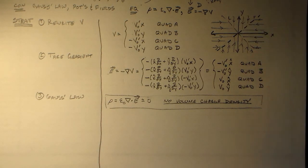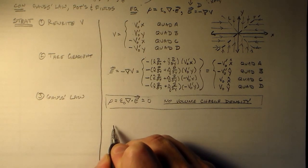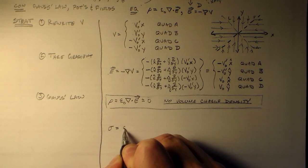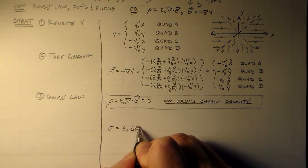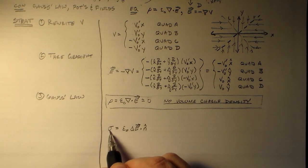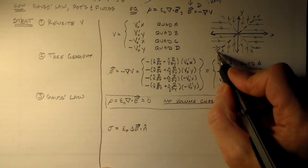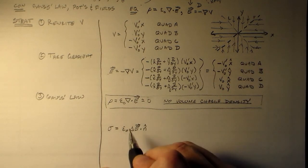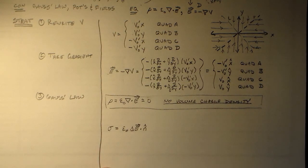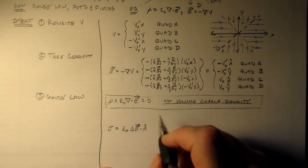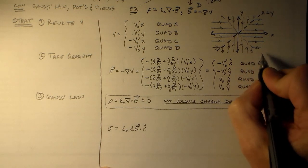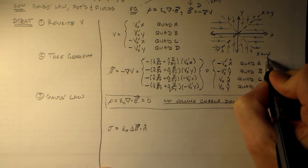How do we take care of that? What I did in class — and this is in your book somewhere as well — I used the rule that the surface charge density at a surface is equal to the change in the electric field times the normal direction of that surface. So we've got four places here, but we really have two: we have x equals y and x equals minus y. We can go ahead and do them for all four.